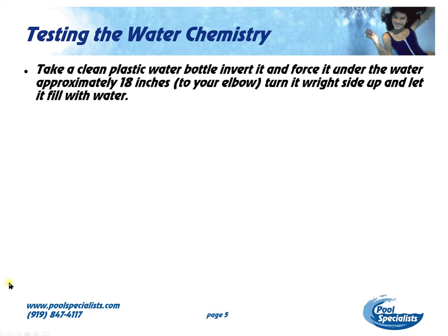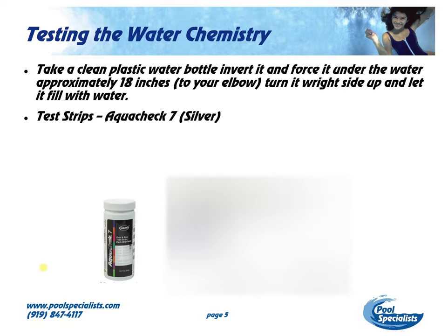Testing our water chemistry. What you want to do is take a clean plastic water bottle, invert it, and then force it under the water up to your elbow — which is about 18 inches — then turn it right side up and let it fill up with water. I recommend using test strips. This is the only brand that we found that actually seems to be accurate as we compare it with standards and with our spin lab. You can purchase these on Amazon or at your pool store.